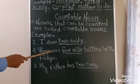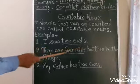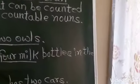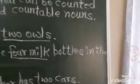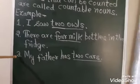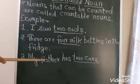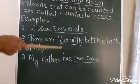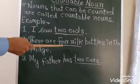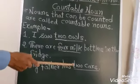Number two. There are four milk bottles in the fridge. Number three, my father has two cars. All these are countable nouns: two owls, four milk bottles, two cars, etc.